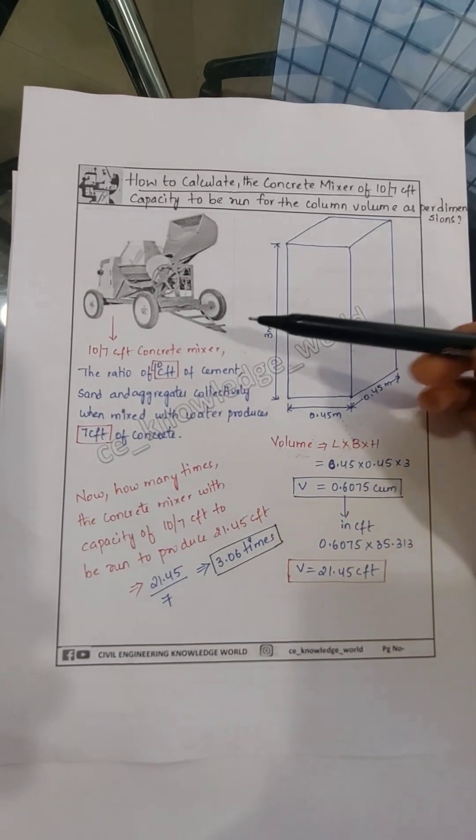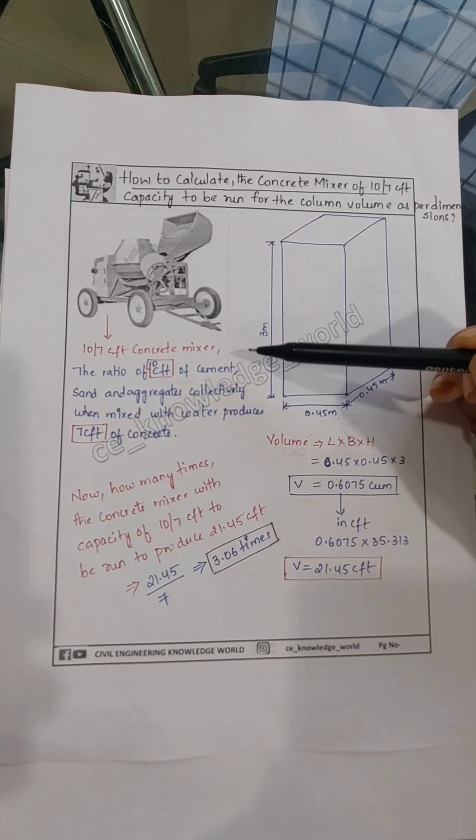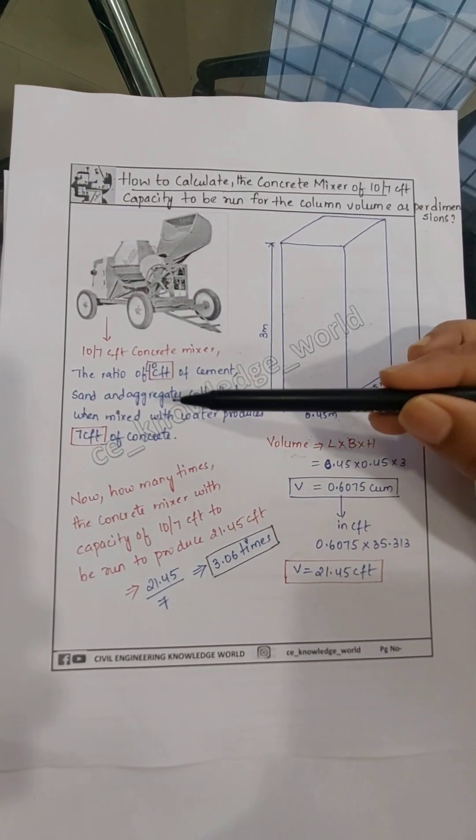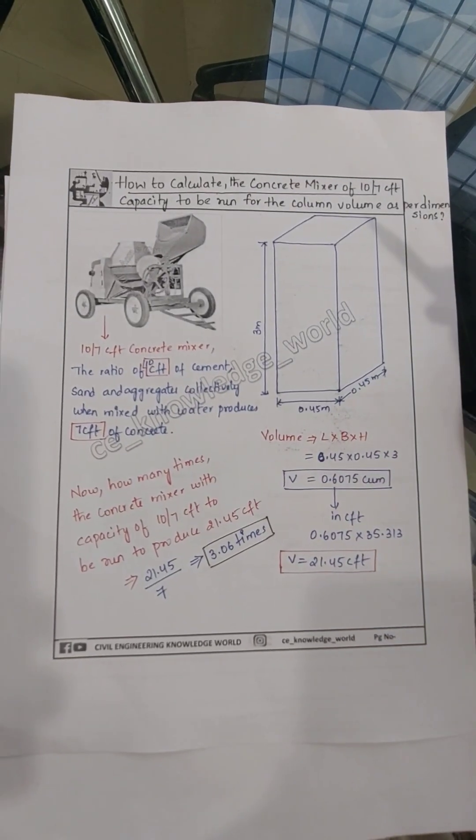This is a concrete mixer of 10 by 7 cft, which means 10 cft of cement, sand, and aggregates when mixed with water produces 7 cft of concrete. Now we need to calculate how many times this concrete mixer will run for finishing this item of work.